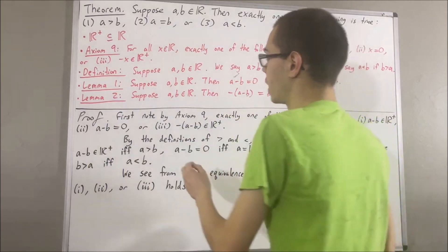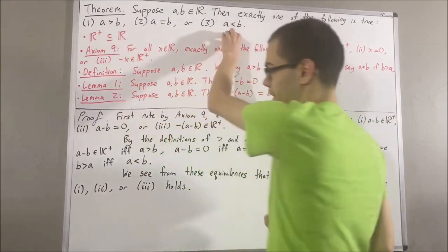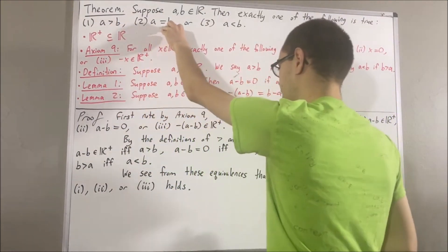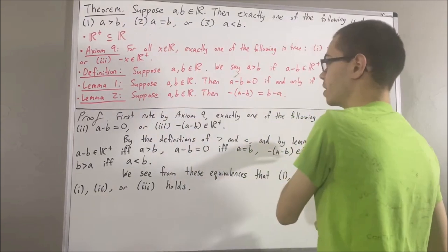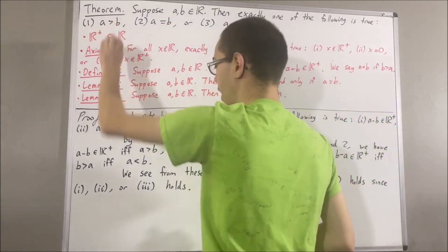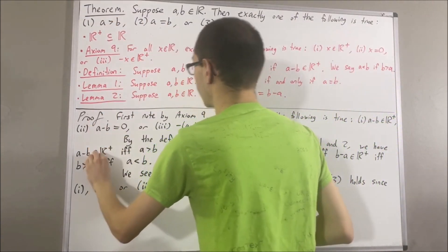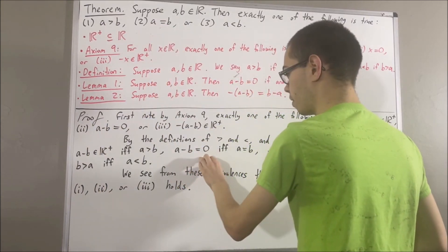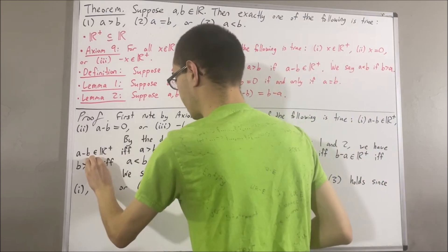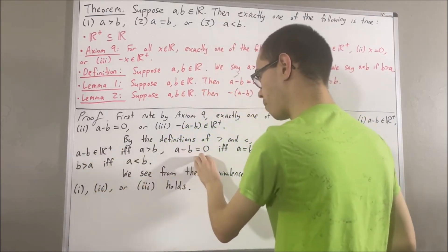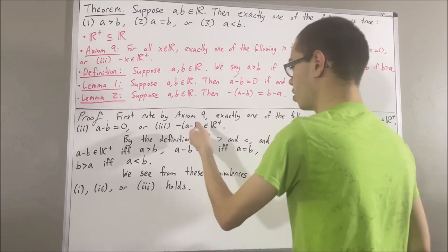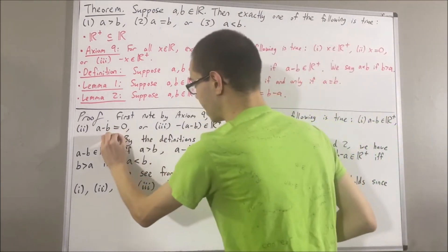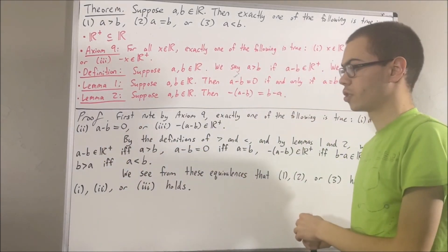Now let's see why it cannot be the case that more than one of these is true. First, if a is greater than b and a equals b, then by our equivalences, a minus b is a positive number and a minus b is equal to zero. But according to Axiom 9, it cannot be the case that both a minus b is a positive number and a minus b is equal to zero. So we reach a contradiction.